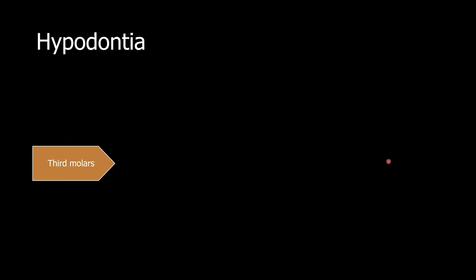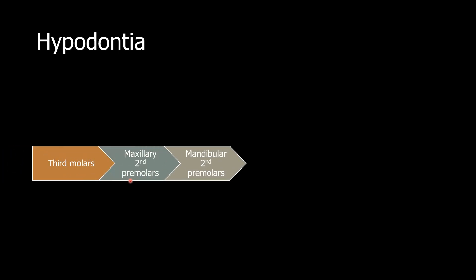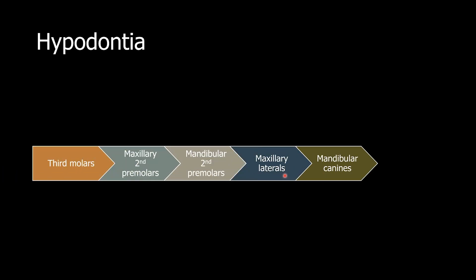The most common congenitally missing teeth are third molars, followed by maxillary second premolars, followed by mandibular second premolars, maxillary lateral incisors, mandibular canines, and then all other teeth.